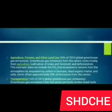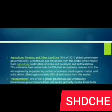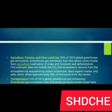Agriculture, forestry, and other land use account for 24% of 2010 global greenhouse gas emissions. Emissions from this sector come mostly from agriculture — cultivation of crops and livestock — and deforestation. This estimate does not include the CO2 that ecosystems remove from the atmosphere by sequestering carbon in biomass, dead organic matter, and soils, which offsets approximately 20% of emissions from the sector.